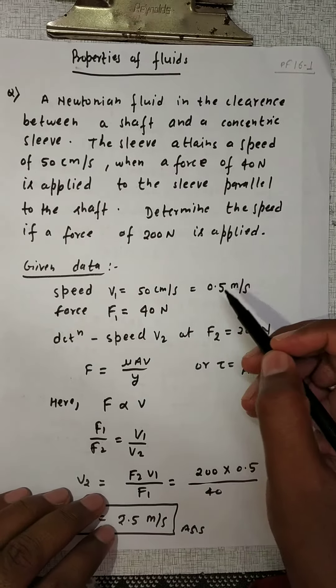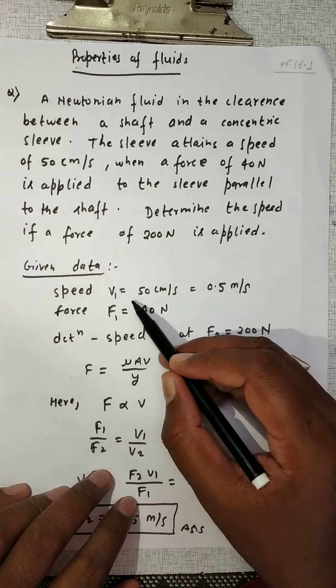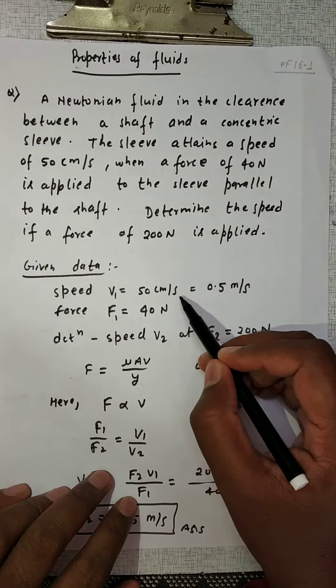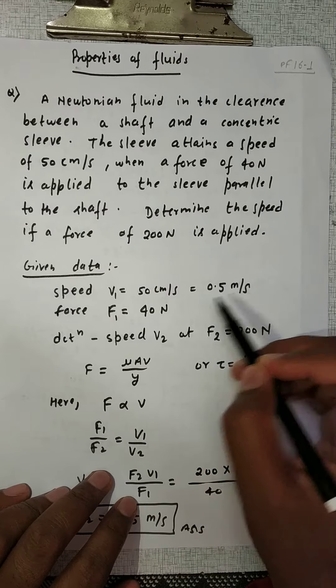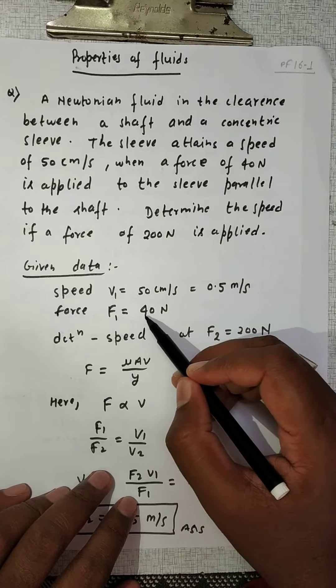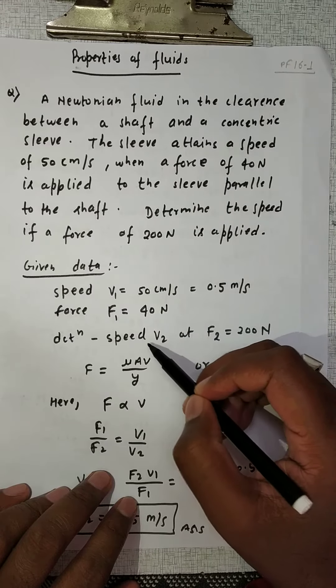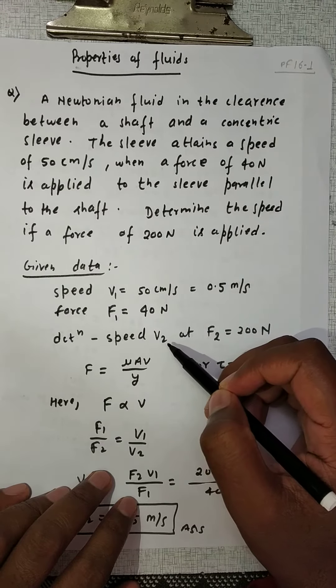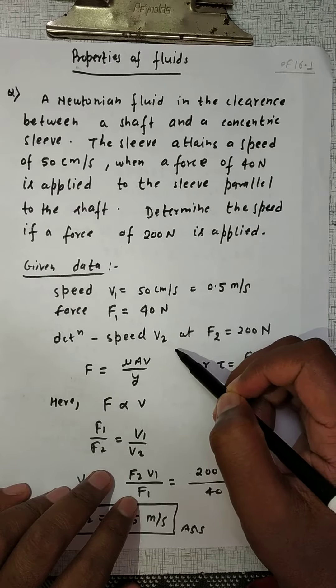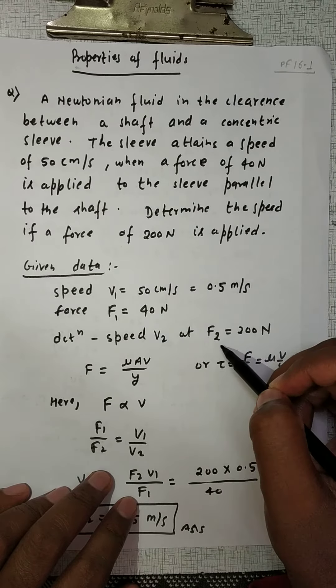So friends, here it is given that speed V1 is equal to 50 centimeters, which equals 0.5 meters per second at force F1 equals 40 Newton. Now determine speed V2 at force F2 equals 200 Newton.